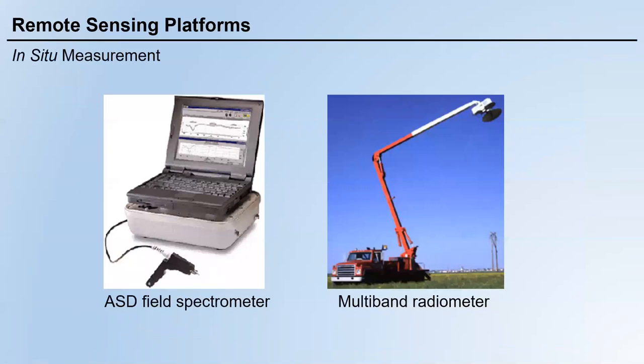Among the three categories of remote sensing platforms, the most special one is in-situ measurement. We're talking about remote sensing — we can use aircraft or satellites to carry sensors to get large-scale, temporally continuous data. So why do we even need in-situ measurement?